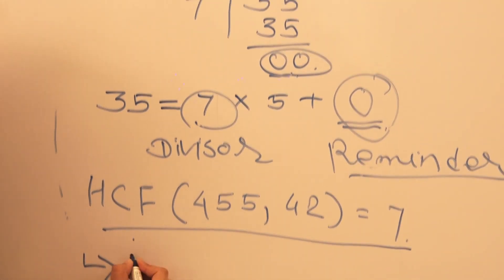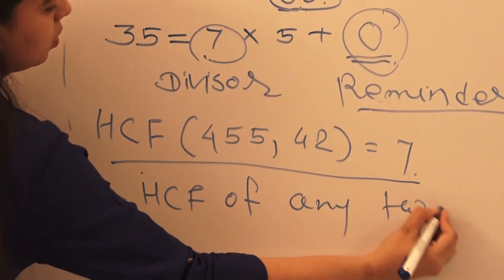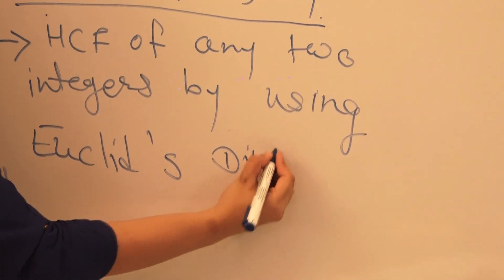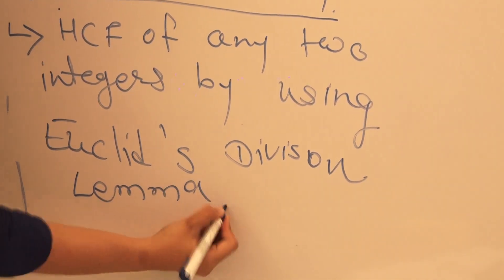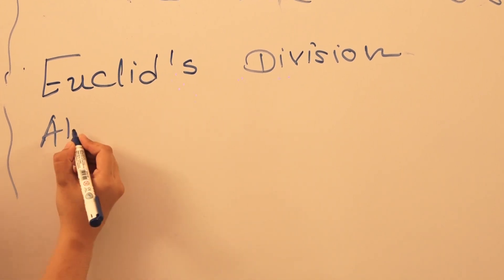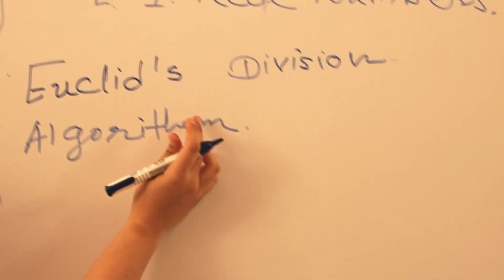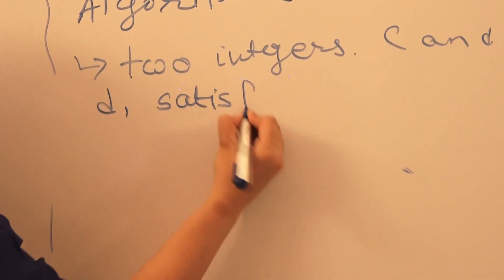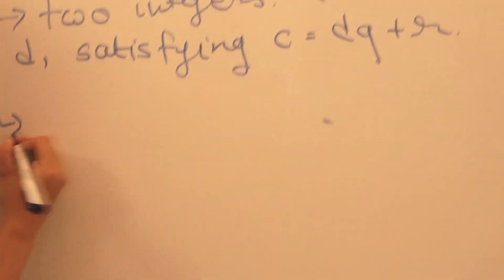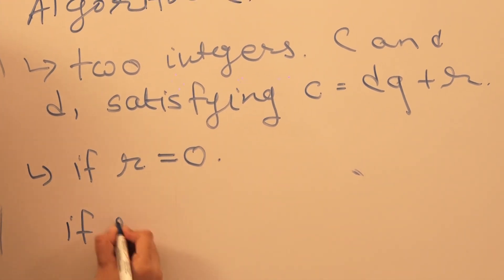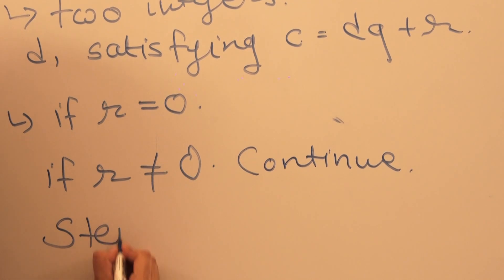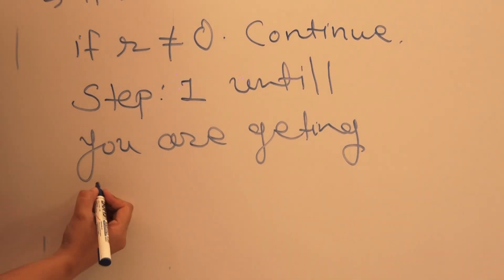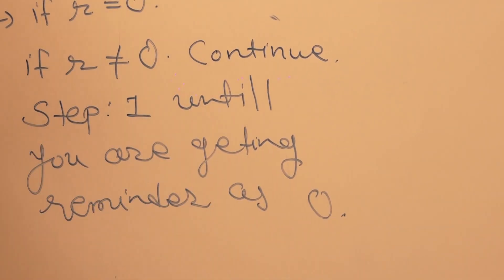So this way you can find the HCF of any 2 positive integers by using Euclid's Division Lemma, and for that you are given Euclid's Division Algorithm. Step 1: apply Euclid's Division Lemma on any 2 integers c and d satisfying the equation c is equal to dq plus r. If r is equal to 0, then you are done; but if you are not getting remainder 0, follow Step 1 again until you get remainder 0, and take the divisor of the last step as your answer.